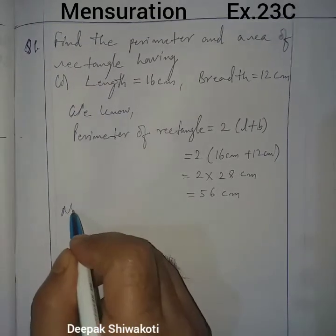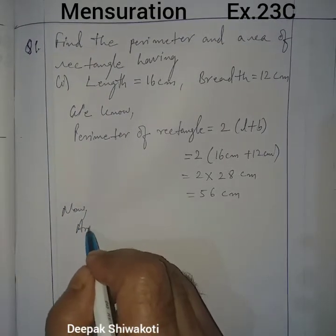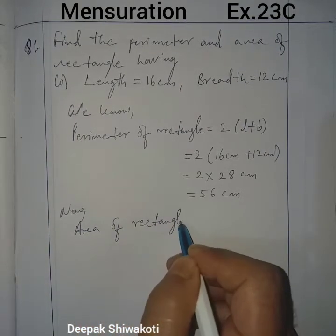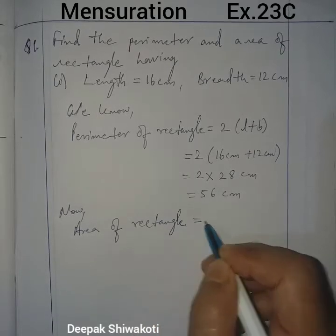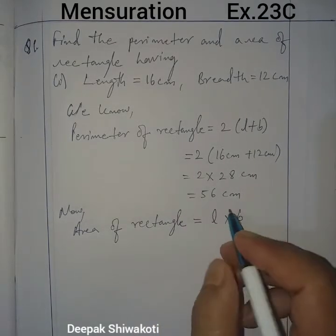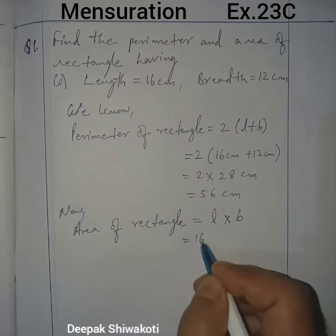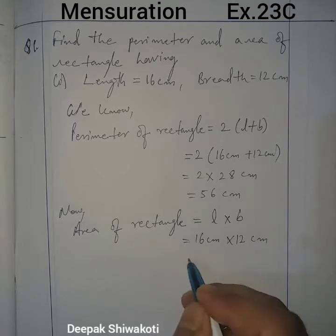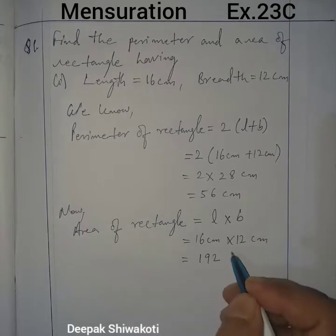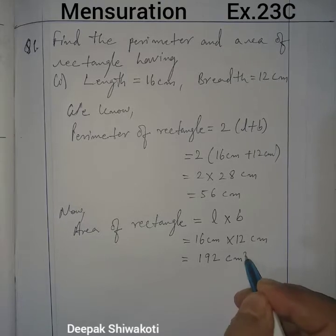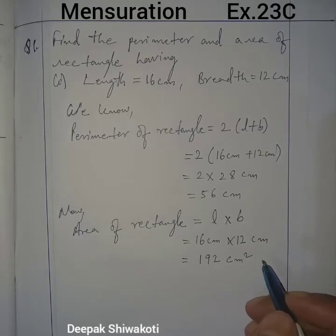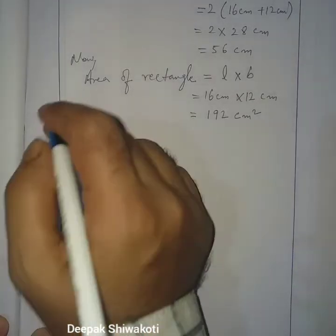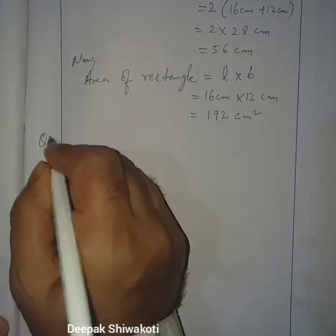It is also asked to find the area of the rectangle. Area of rectangle equals length into breadth. Length is 16 centimeter and breadth is 12 centimeter, so when you multiply you get 192 square centimeter. That is the unit. Now question number two.